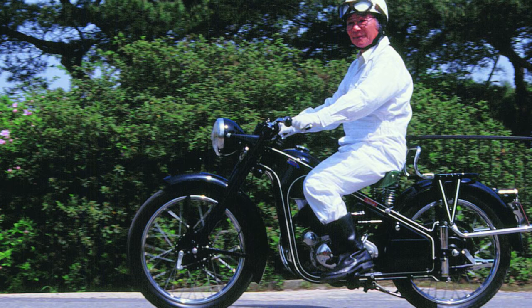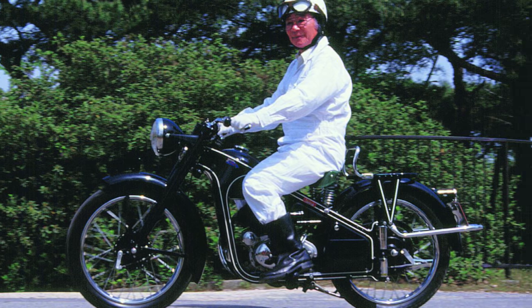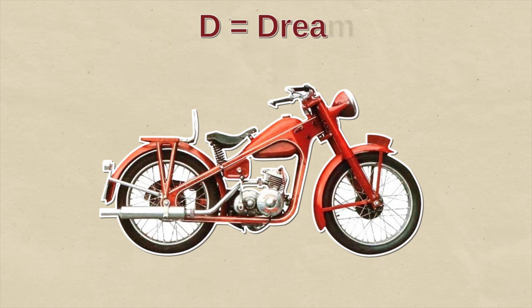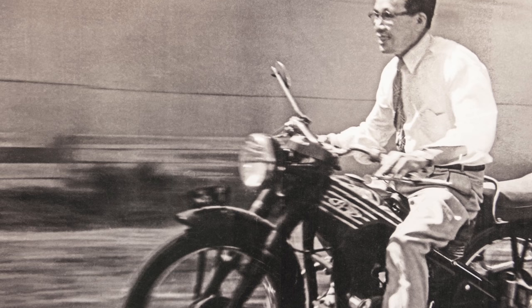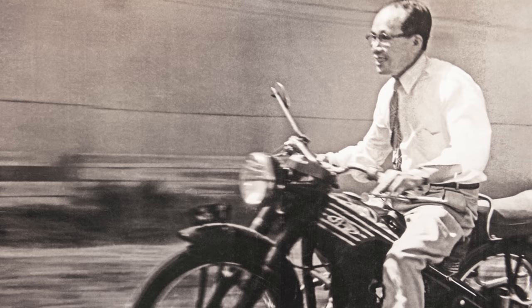The D-Type is released. It no longer looks like a bicycle with an auxiliary engine, but is a full-fledged motorcycle. The D stands for Dream. Soichiro is always talking about his dream of Honda becoming a world-class manufacturer. So someone starts calling it that and it sticks.